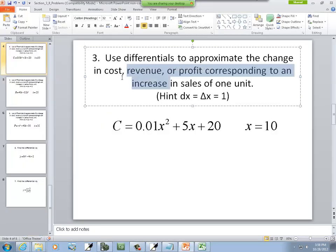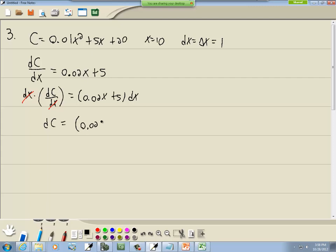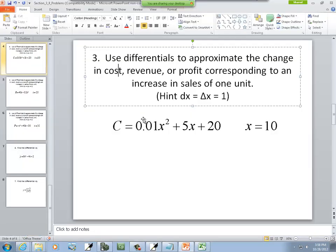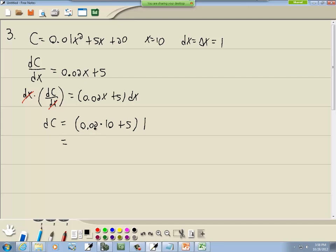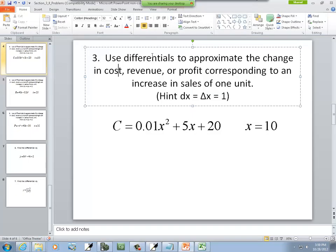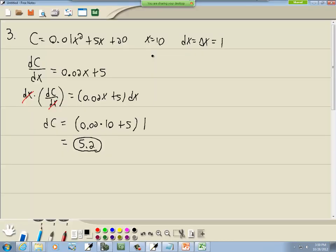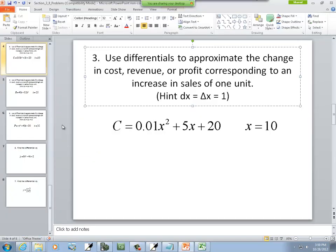And we're approximating the change in cost in this particular one. And then they tell us x is 10, so plug 10 in for the x plus 5 times dx which was 1. 0.02 times 10 plus 5 is 5.2. So again, this is when we're dealing with 10, this is what our approximate change in cost would be.